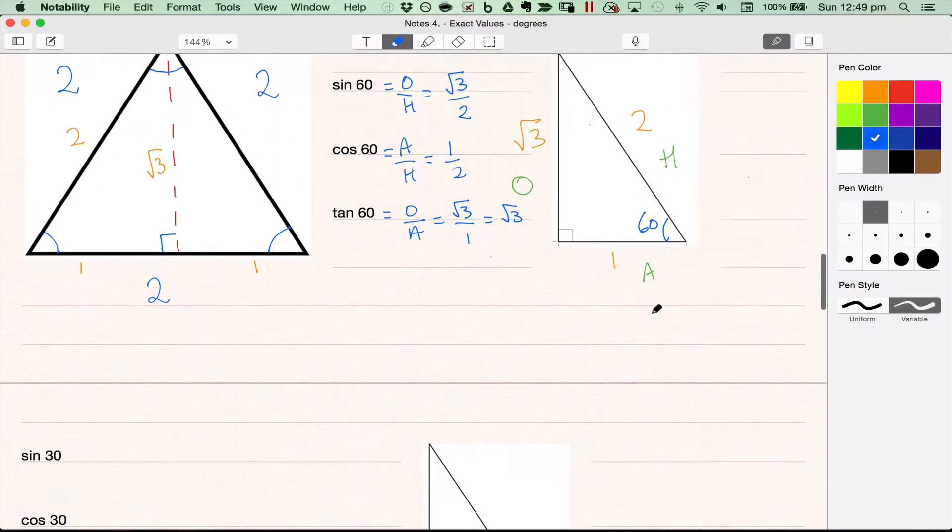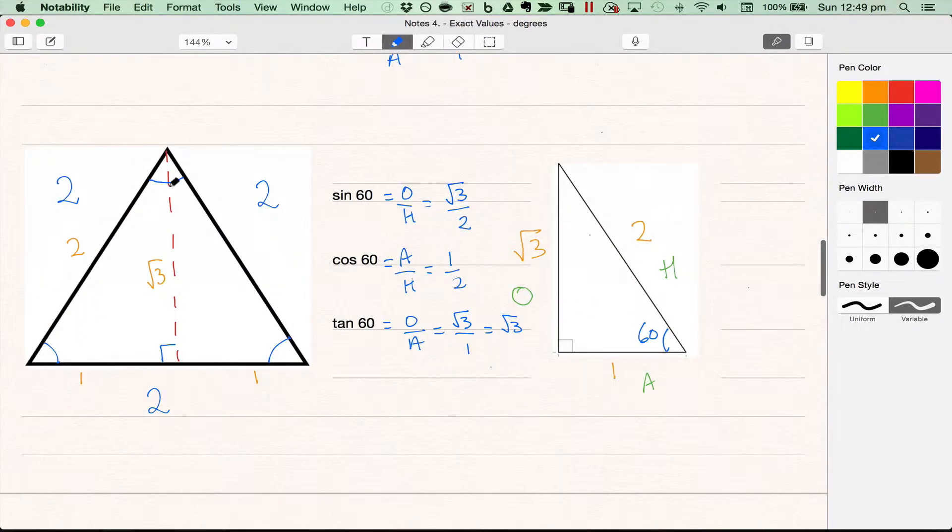So if I go back to this equilateral triangle, we had 60 degrees in each of the corners, but we've chopped it in half to give this triangle. So we can just copy this triangle again and use this angle up here which will now be 30 degrees because it's half of 60.